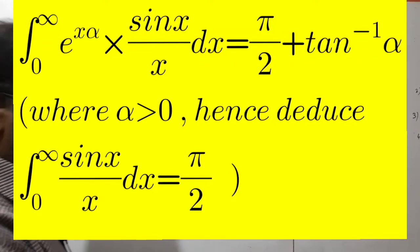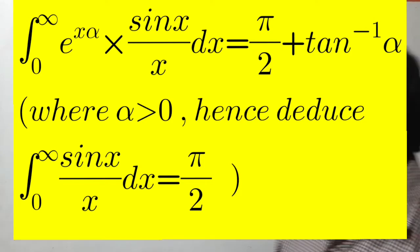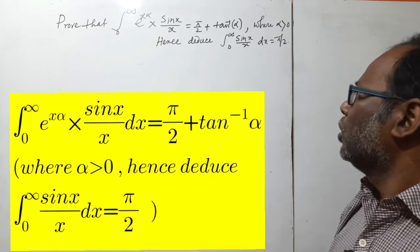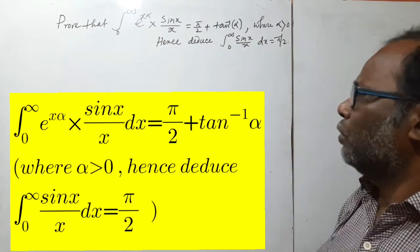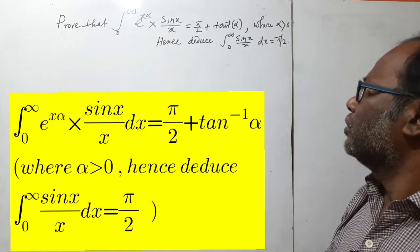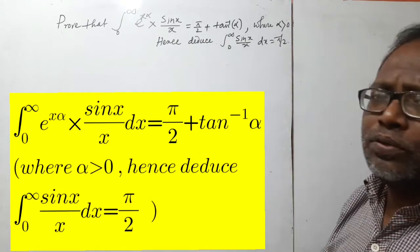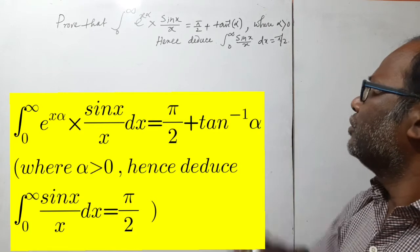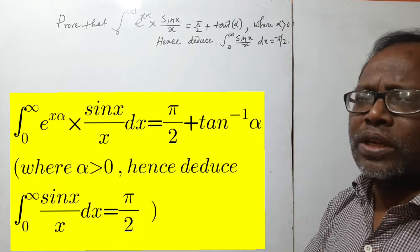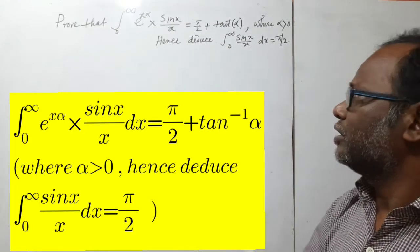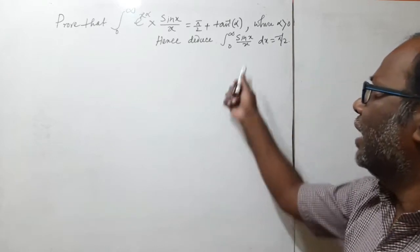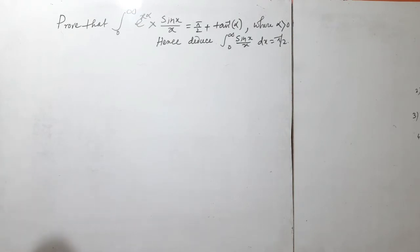Welcome to my channel. Today we look at a very interesting problem for higher study. The integral from zero to infinity of e^(αx) · sin(x)/x dx equals π/2 + tan⁻¹(α), where α > 0. From this, we want to deduce the value of the integral from zero to infinity of sin(x)/x dx = π/2. I am using a different type of technique to find this value.